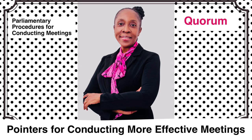The member rises and states: point of order. The president says: please state your point. Member: members have left and there is no longer a quorum — any further business transacted is now null and void. President: thank you, your point is well taken. Since there is no longer a quorum present, this meeting is adjourned. The president then wraps the gavel once.